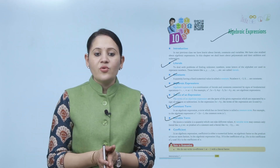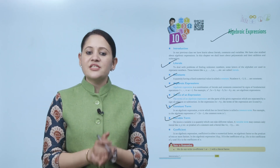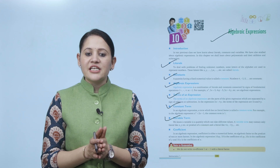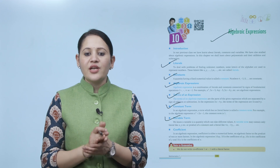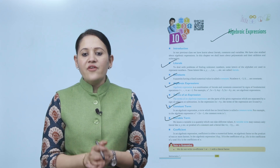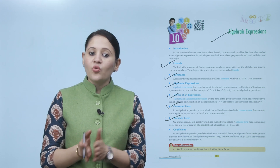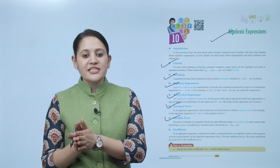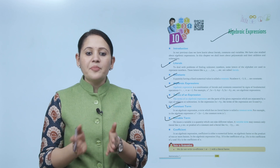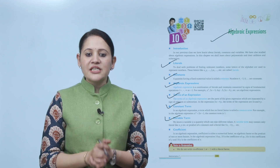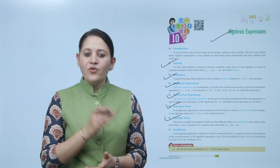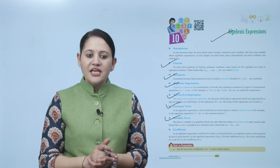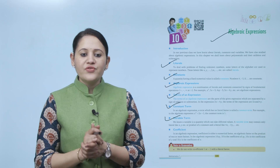Next is variable term. We know a variable is a quantity which can take different values. A variable term may contain only literals like x, y, etc., or a product of a constant and a letter, like 4x, −3y, etc.